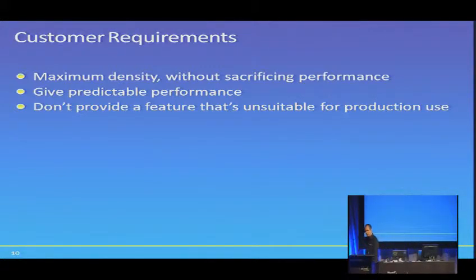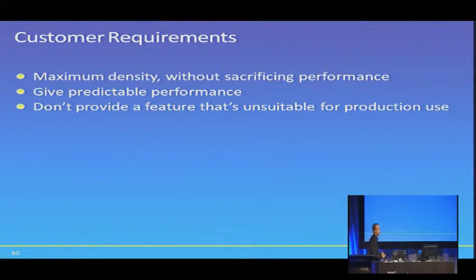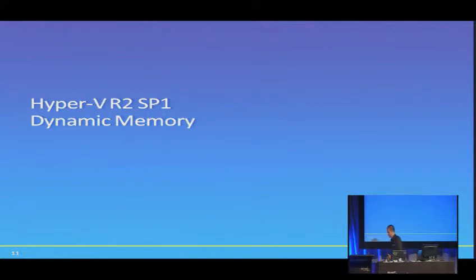In talking to users, a couple of clear expectations came out. First, you've got to increase the VM count without a cost to performance — there's no point running twice as many VMs if they run at half speed. Next, performance needs to be predictable: something you can turn on, leave running overnight, and not worry that something's gone horrifically wrong. And don't give us a feature that's dev-test only — either make it so you can turn it on everywhere, or don't make it. That leads us into dynamic memory.